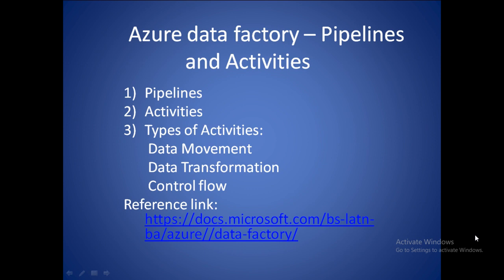Data transformation is where you extract data and then perform changes to it using some scripts. For example, you extract data from the data lake, change it using a Python script, and then put the data back into the data lake. You are extracting data from your source location, making transformations on top of it, and then putting it back. There are many data transformation activities available in Data Factory.